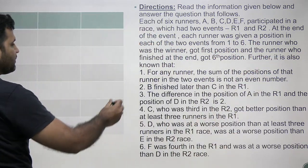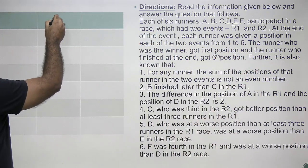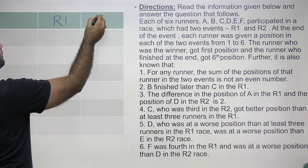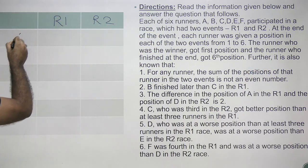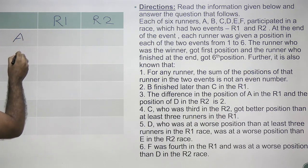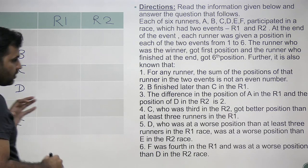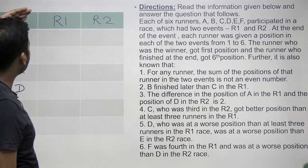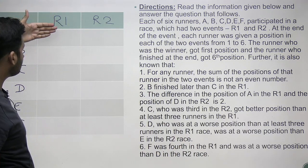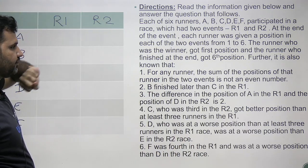So we have two races: Race 1 and Race 2. The number of participants are A, B, C, D, E, and F. Using these hints, we are supposed to determine the ranks of each of these six persons in Race 1 and Race 2.